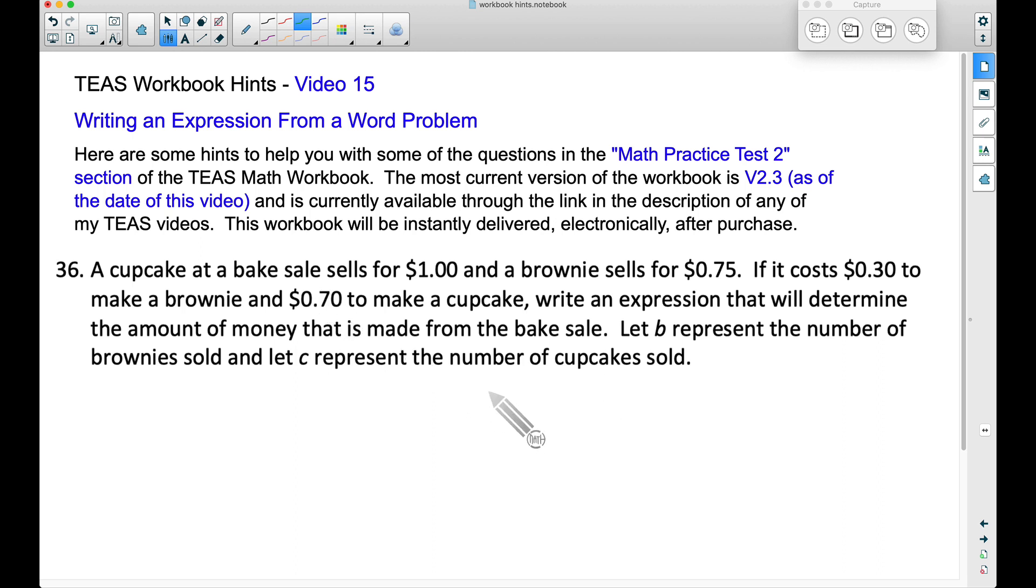So if we think about this, for every cupcake that they sell, they're going to get $1. So we can write that expression as $1 times C, where C represents the number of cupcakes sold. For example, if they sold 20 cupcakes, $1 times 20 cupcakes would be $20.